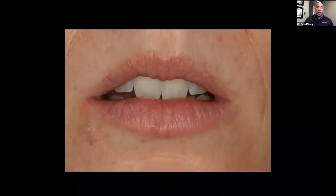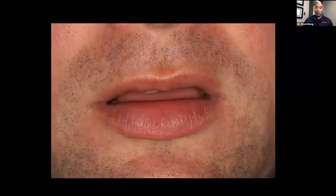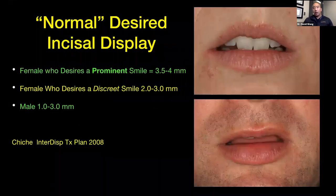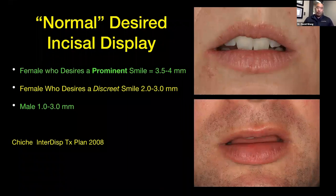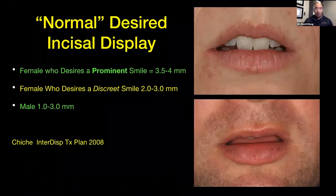Going back to this young lady, at rest she's showing about five or six millimeters. This gentleman is showing barely even one millimeter. So what's normal? If you want a prominent smile and you are female, we're looking at displaying three and a half to four millimeters. For a more discreet female smile, we're looking at two to three millimeters. Males are always one to three millimeters. Part of the reason is that males also tend to have longer upper lips than females.